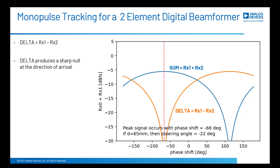Delta gives us a much more accurate way to find direction of arrival — it's a very sharp point instead of the rounded top of the sum beam. So we now have two curves: sum (the summation of RX1 and RX2) and delta (the subtraction). If our beam was pointed a little off-center — say we programmed minus 100 degrees instead of minus 68 degrees — we can see the difference between the sum and delta points is not very large, telling us the RF signal is not centered in the beam. But we don't know which way to move the delay to recenter.